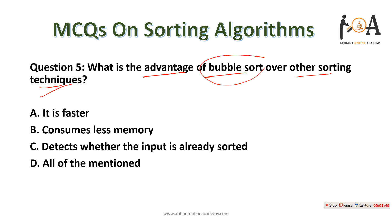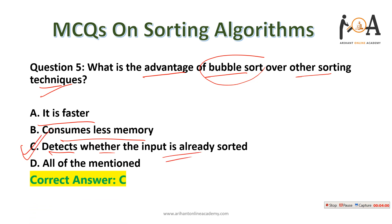The next question: what is the advantage of bubble sort over other sorting techniques? Option C — it detects whether the input is already sorted or not — is the correct answer. Bubble sort detects at the earliest whether the input array is sorted, because in its first iteration it will detect this. If sorted, it completes in just one iteration; if not, it takes n iterations. Option C is correct.